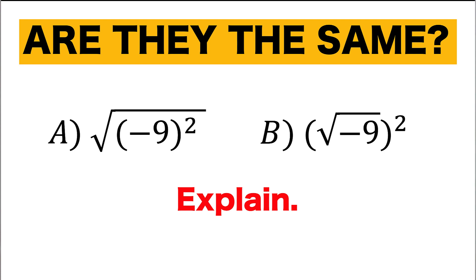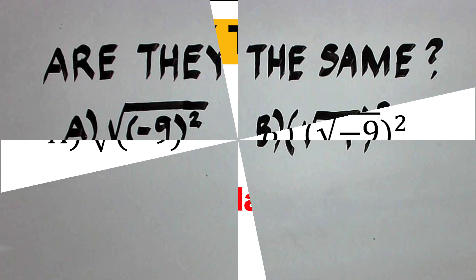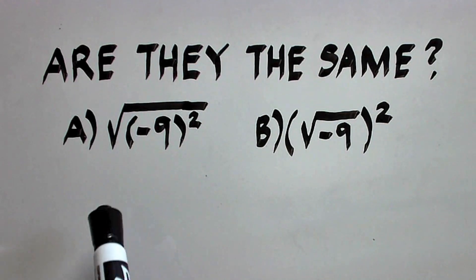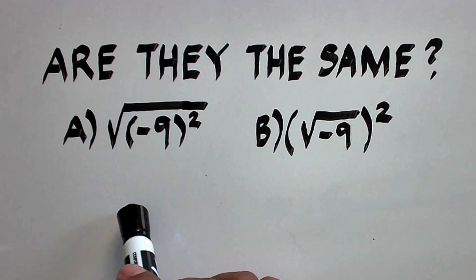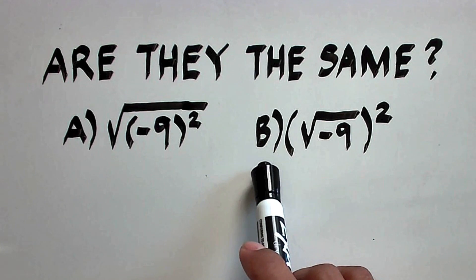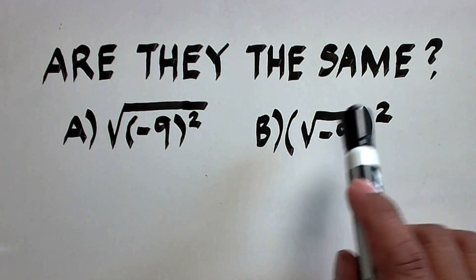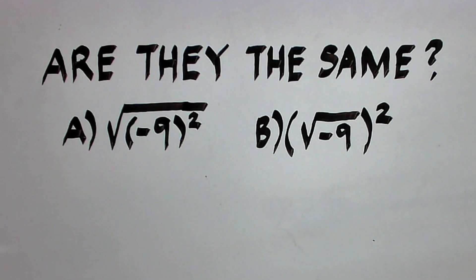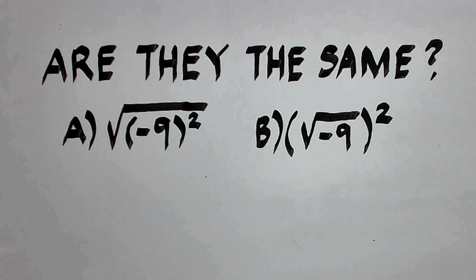Hi everyone, here is our math problem for today. Are these two radical expressions the same? Letter A, we have the square root of the square of negative 9. And letter B is we have the square of the square root of negative 9. You can pause the video and see if you can simplify and answer the question. Are these two radical expressions the same or not?